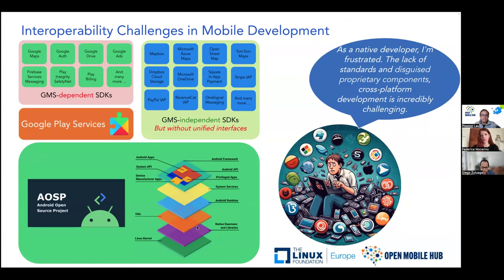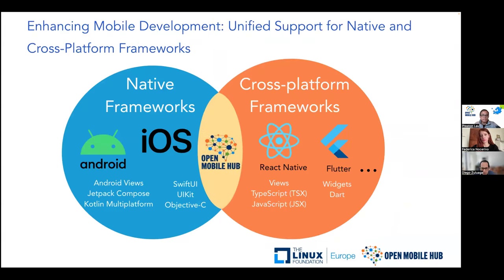When we bring Open Mobile Hub into the picture, it fits right in the middle. OMH acknowledges that there are native developers building apps in native technologies, and there are also many developers working on cross-platform frameworks, each with pros and cons. For Android, they use Android Views, Jetpack Compose, Kotlin Multiplatform. For iOS, there are other technologies, and React Native of course. Open Mobile Hub attempts to bridge that gap by providing both native frameworks and cross-platform components, so you can live in both worlds.